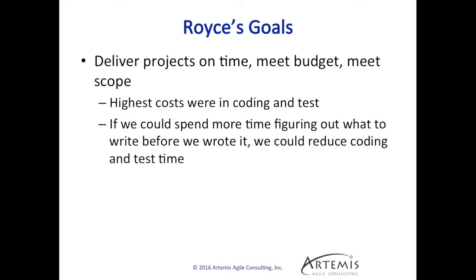So what was he trying to do? He was working with teams trying to find a way to deliver projects that were on time, met budget, and met the scope — fixed time, fixed budget, fixed scope. What he found when analyzing all the time and effort invested in projects was that the highest cost was coding and test. So he thought: if we can spend more time up front figuring out what to write before we actually write it, develop a proof of concept, then go write the real implementation — if we have better foreknowledge of what we're going to do, we can reduce our coding and test time. Very standard cost-benefit analysis.